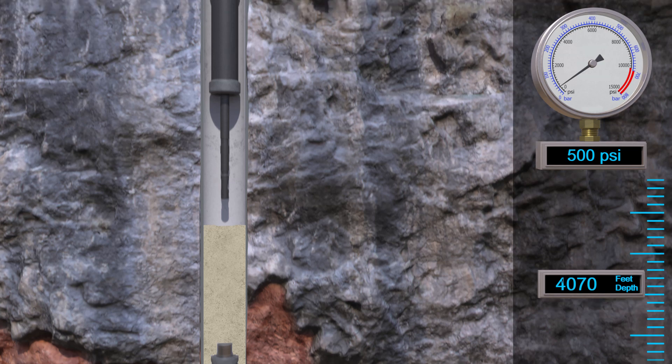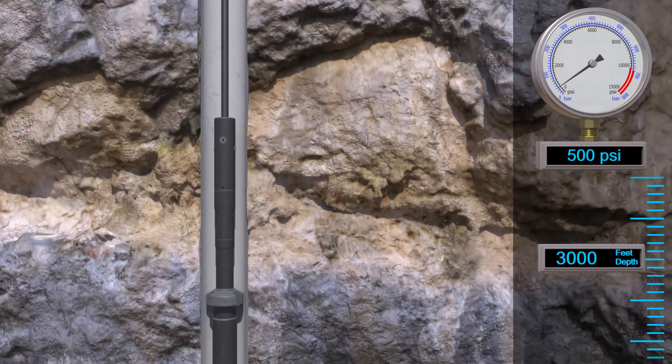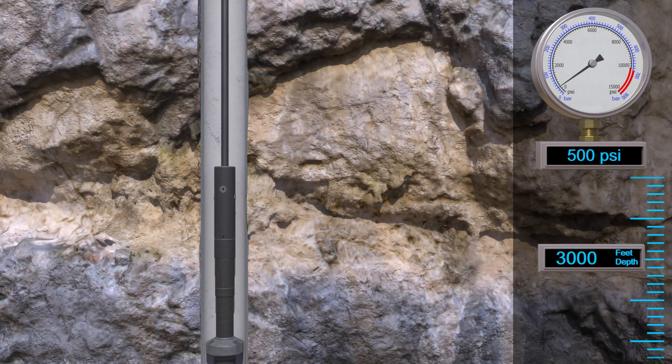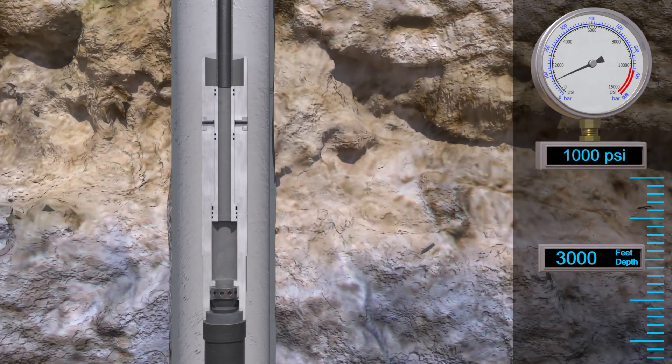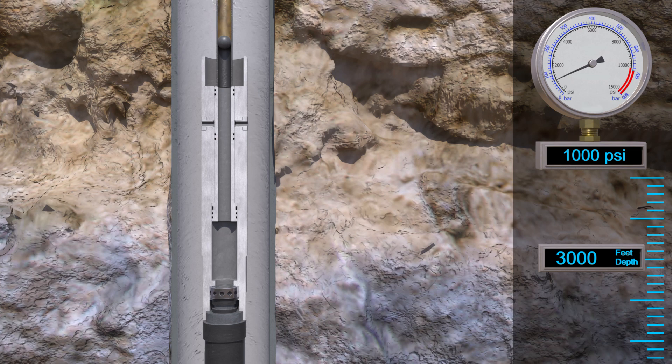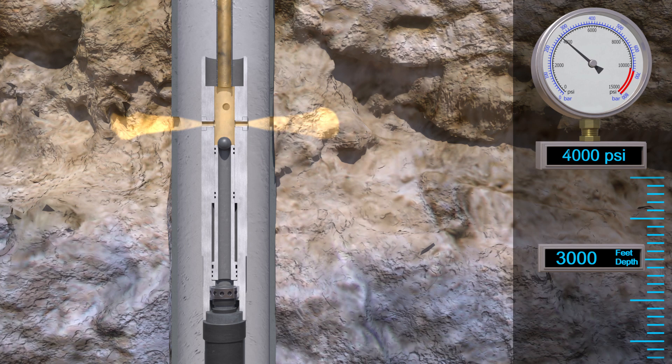Let's trip out of the hole to 3000 feet where the primary cement job is poor on the outside of the production casing. It's time to activate the abrasion perforator portion of the tool. A ball gets pumped down the coil, followed by a sand slurry. Once the ball seats, it shifts the piston downward, exposing the jet nozzles to start abrasion perforating.